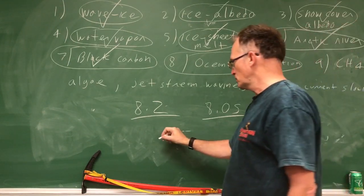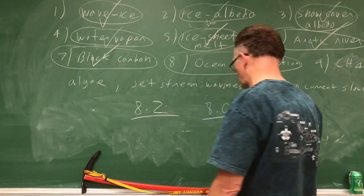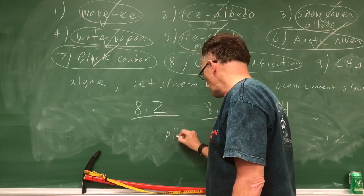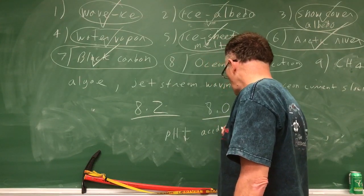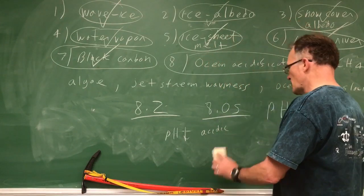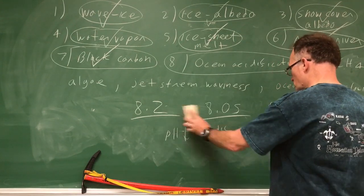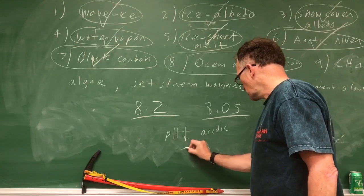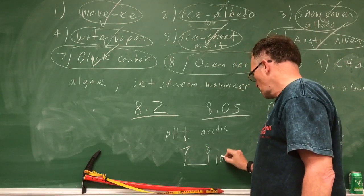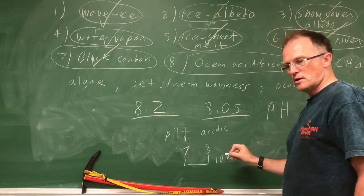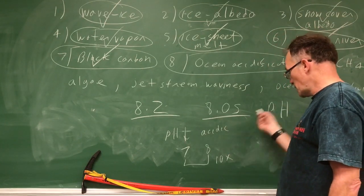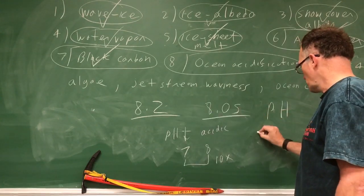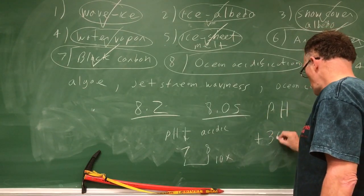But pH is a logarithmic scale. The smaller the pH, the more acidic you get. So the pH is dropping. The ocean is becoming more acidic. A drop from, say, 8 to 7 would be a 10 times increase in hydrogen ions or acidity, which pH is a measure of. So this drop is about an increase of acidity in the ocean of about 30%.